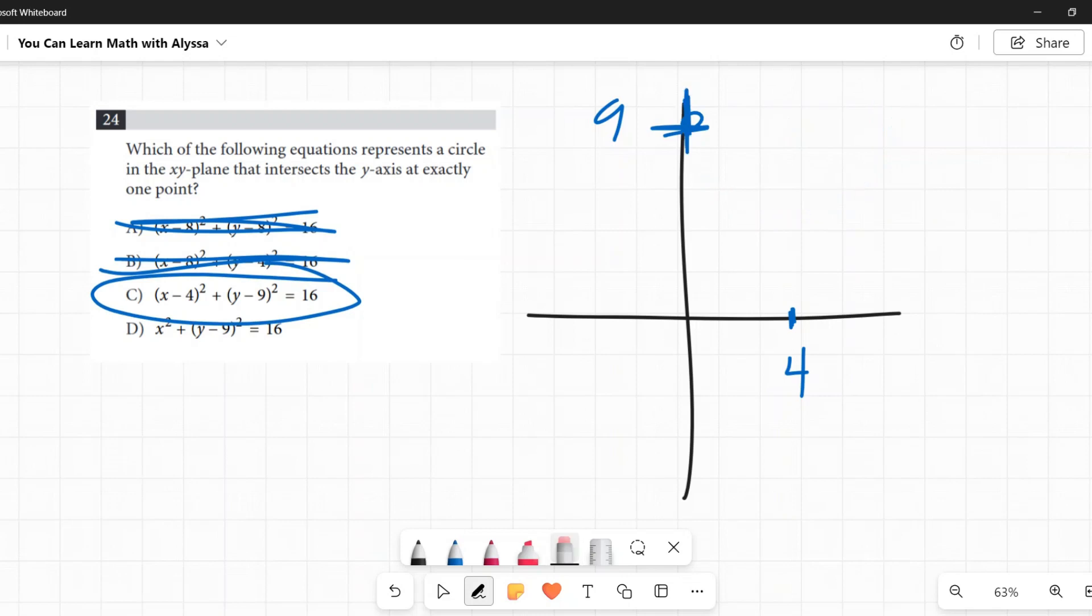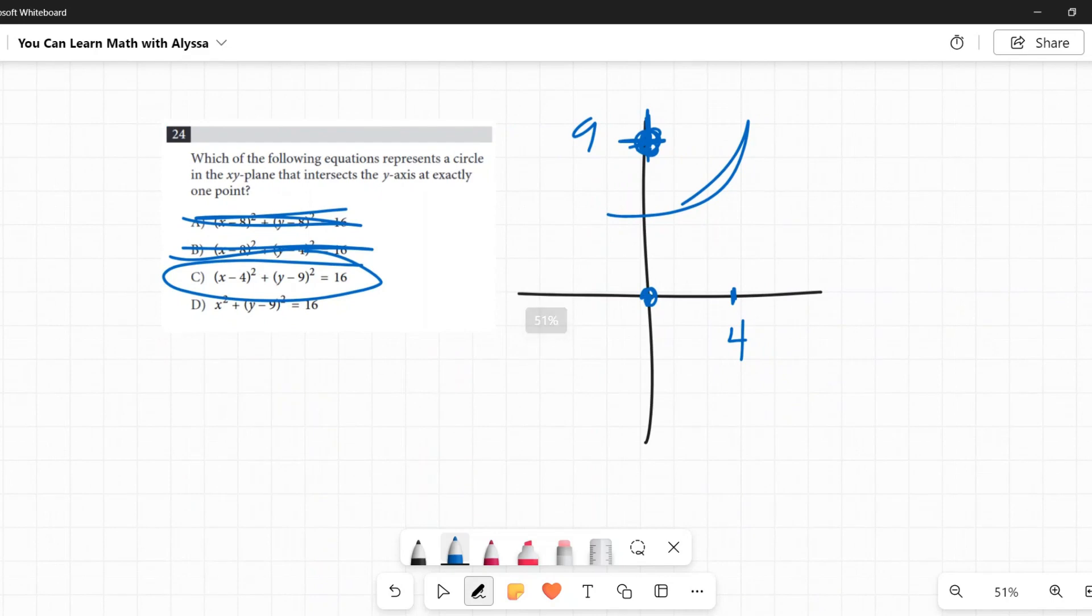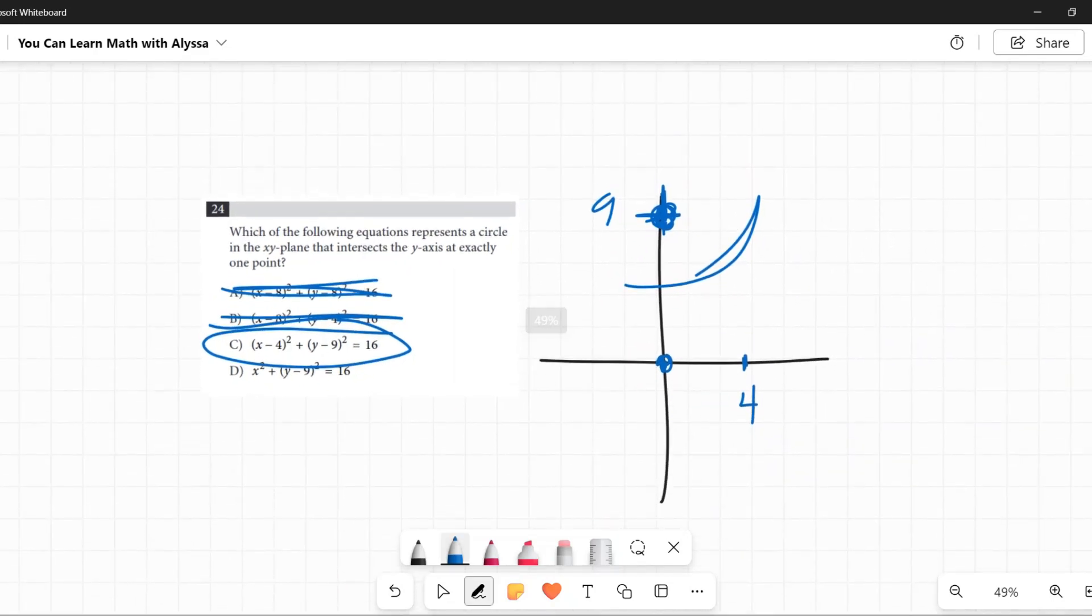But just to double check, let's look at D. D says x squared. So that means we're at 0. But then y minus 9. So that means we're up here. So our center is up here. And a radius of 4. This is not going to work either. Because if I continue this, as you see, it's going all the way around. It's going to intersect the y-axis at 2 points. So confirmed. C is my answer.